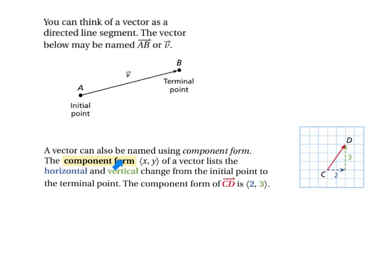A vector can also be named using component form. The component form lists the horizontal and vertical change from the initial point to the terminal point. For example, the component form of vector CD could be written as vector ⟨2, 3⟩, meaning right 2, up 3.